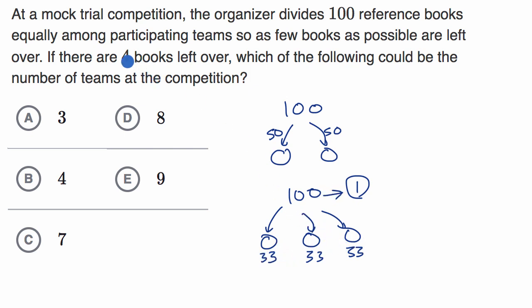Now they're telling us a situation where there are four books left over. So if there are four books left over, how many were given to the teams? Well, 100 minus four is equal to 96. So that means that 96 were equally distributed to the teams. And so one way to think about it is, if that is true, then 96 has to be perfectly divisible by the number of teams.